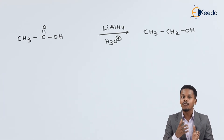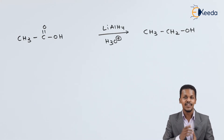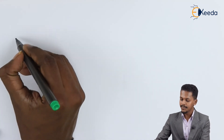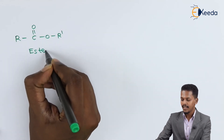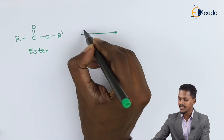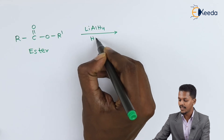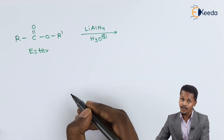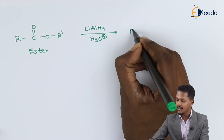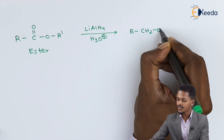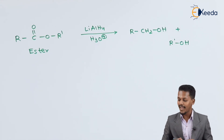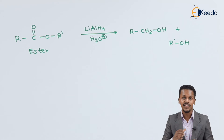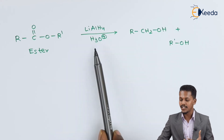Now, what if we have to prepare alcohol from an ester? If we consider an ester RC(=O)OR', and react it with lithium aluminum hydride in presence of an acidic condition, we can obtain a mixture of two alcohols: RCH2OH plus R'OH. So we get a mixture of alcohols — that is the specialty of this reaction. We can obtain a mixture of alcohols by treating the ester with lithium aluminum hydride in acidic conditions.